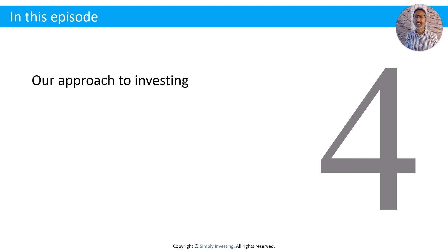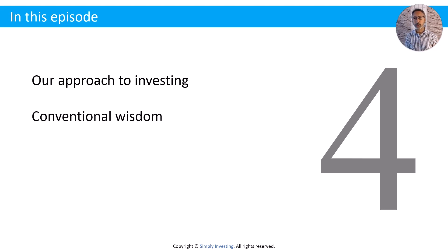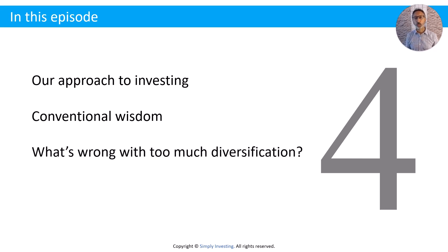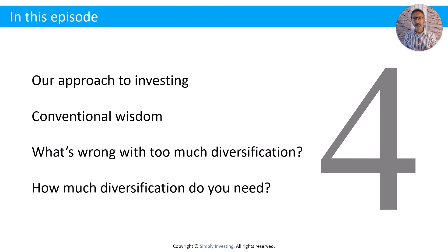First, I'm going to begin with our approach to investing. This is important to know because that's going to help us in the following topics. The next one is conventional wisdom as it relates to diversification when it comes to investing. Then we're going to look at what's wrong with too much diversification in your portfolio. And then section number four, we're going to look at how much diversification do you really need when it comes to investing.